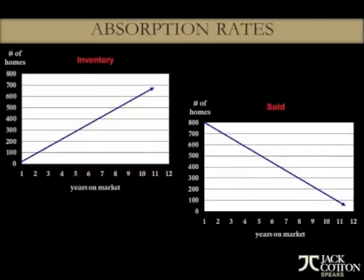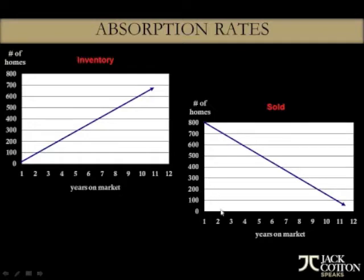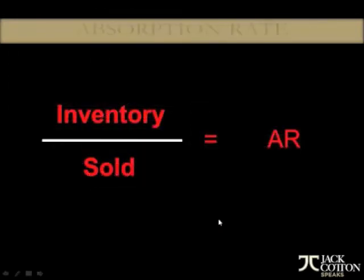I also like to look at absorption rate. So if you have a lot of homes on the market and not many are selling, you could be looking at years and years on the market. That means you can have a long time on the market and the absorption rate is really going to be high. On the other hand, if lots of homes are selling, then the absorption rate moves really quickly, so you find things are selling at a more rapid pace.